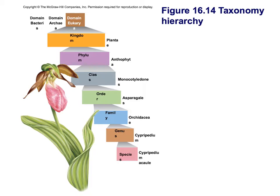Here's another view of this overall system. We have three domains of life, which are the largest categories. Each domain, such as domain Eukarya, is broken down into different kingdoms — in this case, kingdom Plantae, because we are looking at a plant. Plants are broken down into phyla, such as Anthrophyta. Phyla are broken down into classes, like monocotyledons, which are then broken down into orders, families, genuses, and finally species.